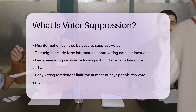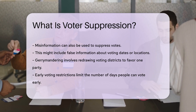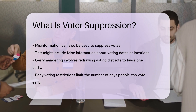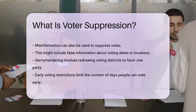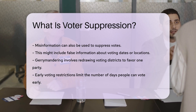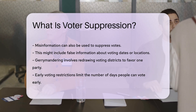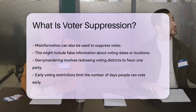Gerrymandering is another tactic, which involves redrawing voting districts to favor one party. Early voting restrictions can also suppress votes — limiting early voting days reduces opportunities for people to vote.